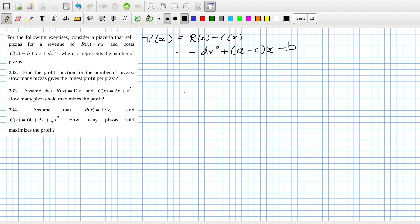How many pizzas give the largest profit per pizza? So the derivative here is -2dx + (a - c) equals zero. That means x would be (a - c) over 2d. We have to assume a is more than c and d is positive I guess.